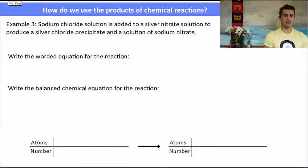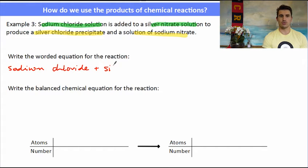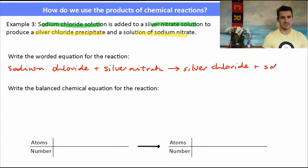Example number three. Sodium chloride solution is added to a silver nitrate solution to produce a silver chloride precipitate and a solution of sodium nitrate. Here we're given the names of the chemicals but we're not given the chemical formulas. These are all ionic compounds and you're given a solubility table so you can determine the formulas. So the worded chemical equation would be sodium chloride plus silver nitrate reacts to form or goes to silver chloride plus sodium nitrate. Now remember that a precipitate, when we did that little activity, two solutions mixed together, if they form a solid, the solid is the precipitate. So in this reaction, they said that silver chloride is the precipitate, so that must be the solid.